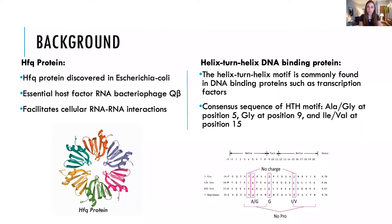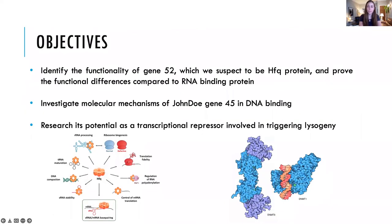We found two other AZ phages with an HFQ protein and 12 other AZ phages that have the helix-turn-helix protein. Our objective in this presentation is to explore the functionality of gene 52, which we suspect to be HFQ protein, and investigate the functional differences compared to RNA binding protein. Also, to investigate molecular mechanisms of John Doe gene 45 in DNA binding, as well as its potential as a transcriptional repressor involved in triggering lysogeny. John Doe contains unique DNA and RNA binding proteins, which we will discuss further.